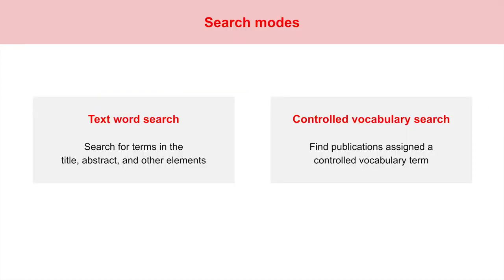Search modes include two ways of searching. The text word search is a search for terms in a publication's title, abstract, and other elements — it's a free text search. Next is the controlled vocabulary search, which finds publications assigned a specific controlled vocabulary term. To conduct a comprehensive search, use both modes together.